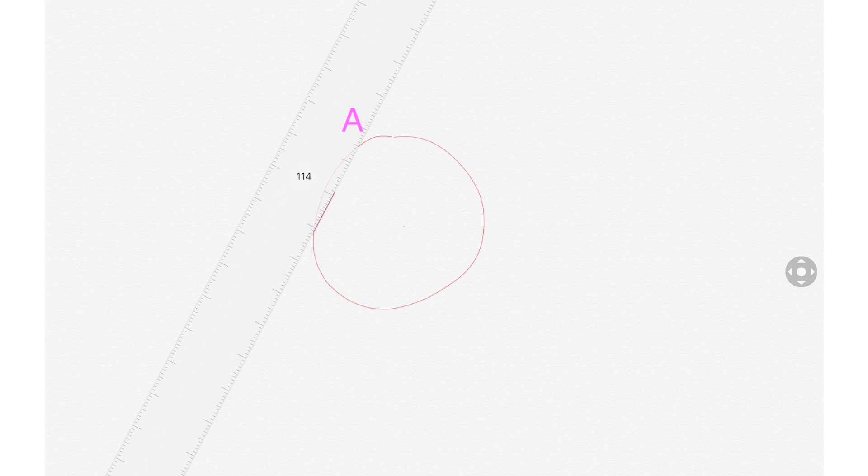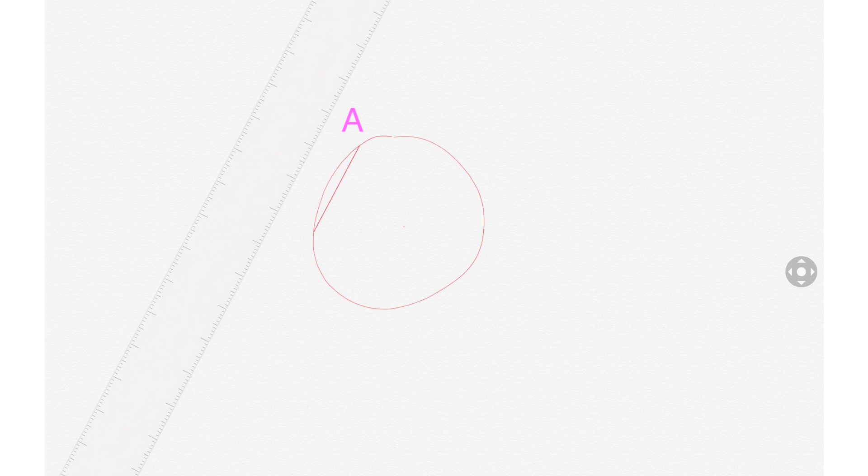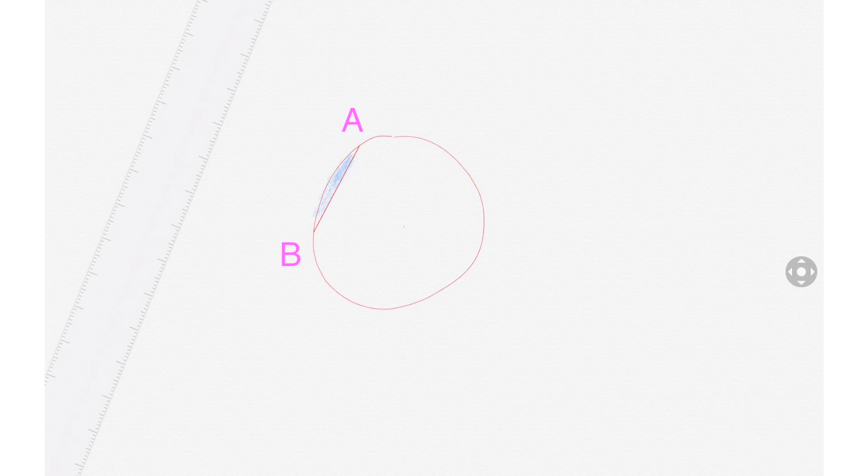Okay, I hope you tried it on your own. We're gonna do it together now. So AB equals 6, and the radius equals 6.